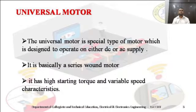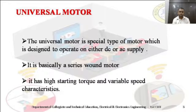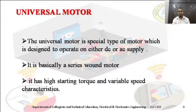The universal motor is a special type of motor which is designed to operate on either DC or AC. It is basically a series wound motor. It has high starting torque and variable speed characteristics. The universal motor is called a special type because we can operate it on both AC as well as DC supply.